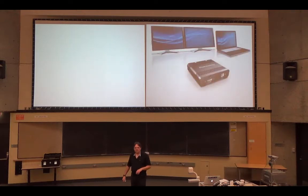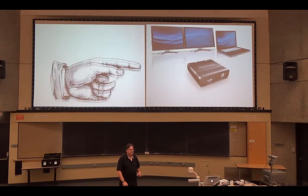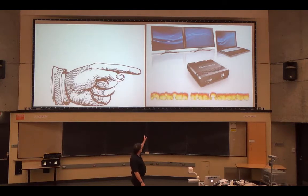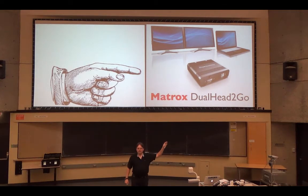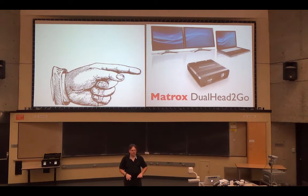The way we do this is with a little black box called a Matrox box. There it is right there. Matrox is the name of the company. The box I'm using is called dual head to go. You also have triple head to go if you want to split your screen into three other outputs.